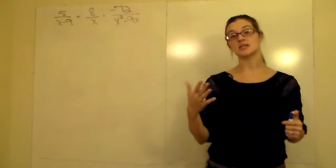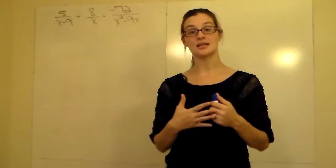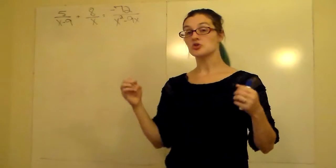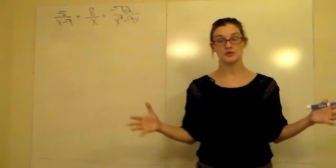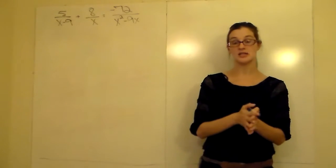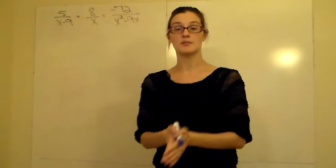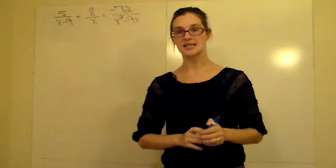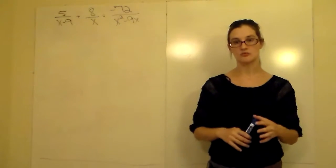When you were adding or subtracting, you had to find an LCD and combine the fractions. When you do not have an equal sign, you have to do the math with the fraction. If you're adding or subtracting, use your LCD to combine your fractions. If you're multiplying or dividing, you do not need an LCD. You just factor and then reduce.